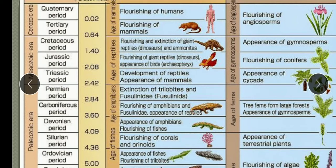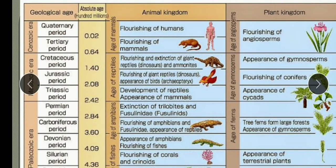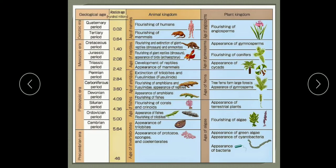The quaternary period has two epochs: Pleistocene and the recent. In the quaternary period, humans flourished — it is known as the age of modern man, marked by the development of human culture. In the Pleistocene epoch, about one million years ago, there was extinction of large mammals. Modern man developed, and in the plant kingdom the angiosperms, grasses, and dicots all flourished well.